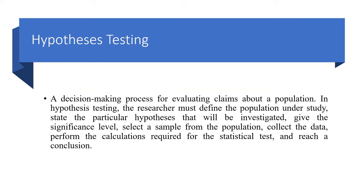Manufacturers in the auto industry are looking at whether seatbelts might help prevent the severity of injuries after a crash. These types of questions can be addressed through statistical hypothesis testing, which is the decision-making process for evaluating claims about a population. In hypothesis testing, the researcher must define the population under study, state the particular hypothesis that will be investigated, give the significance level, select a sample from the population, collect the data, perform the calculations required for the specific statistical test, and reach a conclusion.